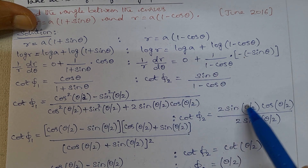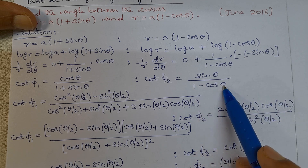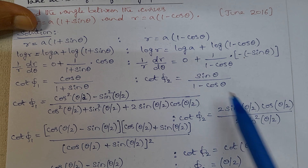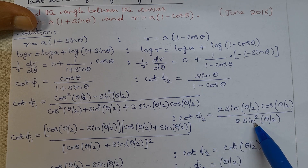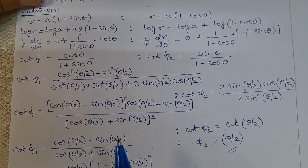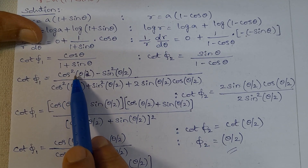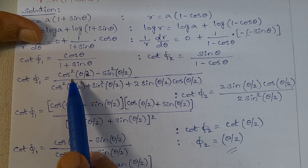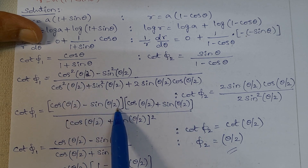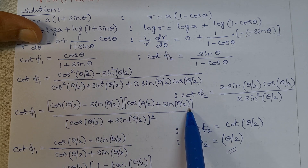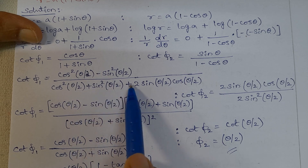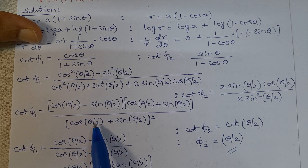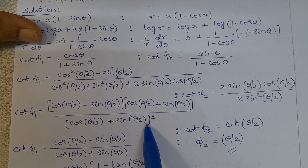Also, 1 minus cos theta equals 2 sin squared (theta by 2). Then applying the a squared minus b squared formula, that is (a minus b)(a plus b): we get cos(theta by 2) minus sin(theta by 2) times cos(theta by 2) plus sin(theta by 2). The denominator uses the (a plus b) whole square formula, giving cos(theta by 2) plus sin(theta by 2) whole squared.